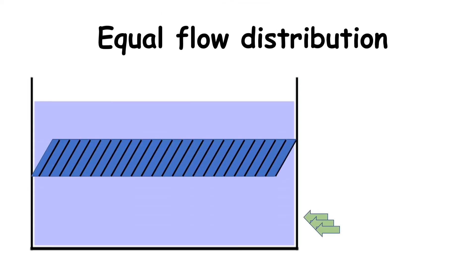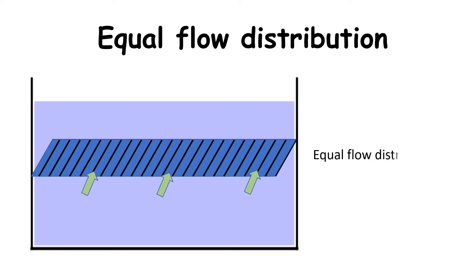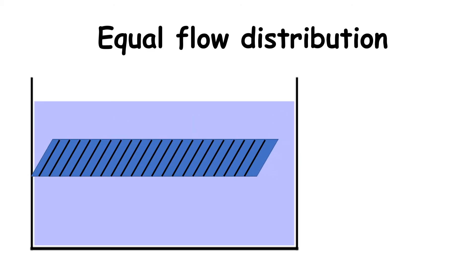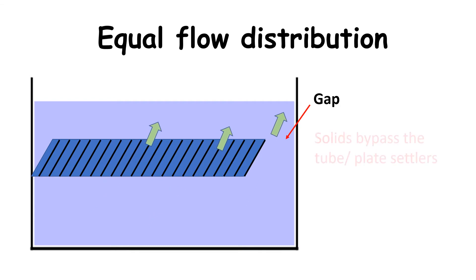Equal flow distribution is very important for both tube settlers and plate settlers to ensure that 100% of the added clarifier capacity is used and not bypassed. Larger gaps in tube settlers or plate settlers can cause short-circuiting of flow, so the solids bypass the settling areas and are carried out with the effluent.